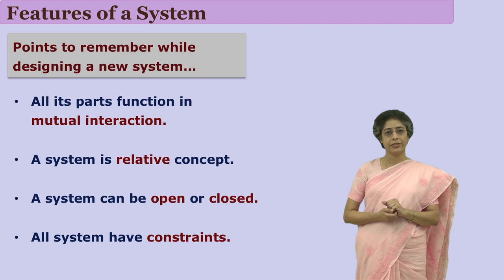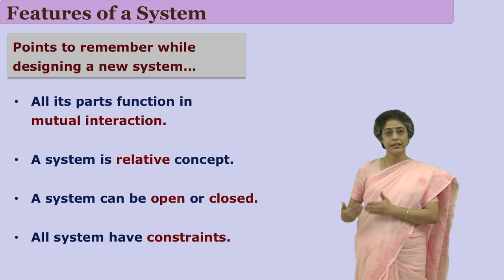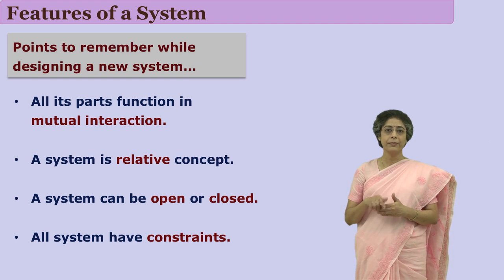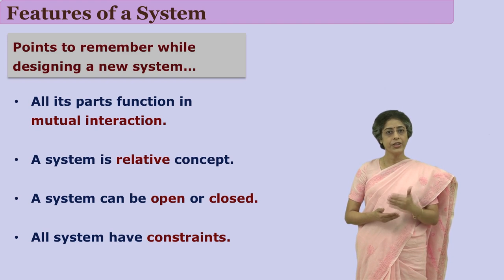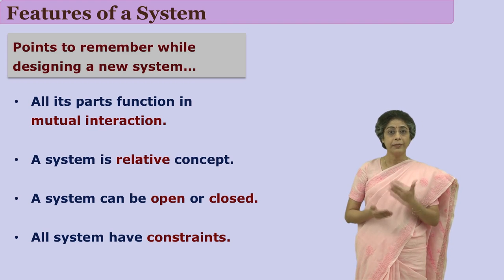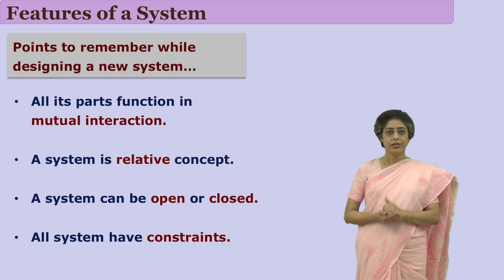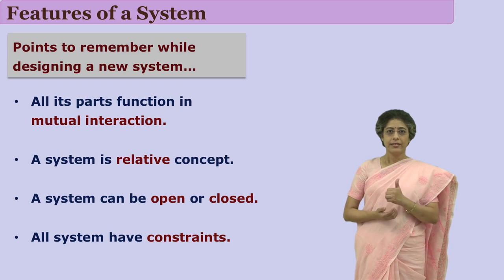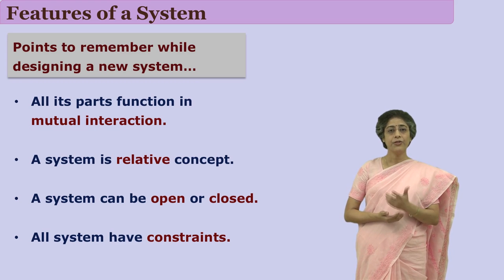A system is a relative concept. A system has many components, and many of these components themselves can be subsystems. For example, if we talk about a school, then the library is a component of a school, and the library itself is also a subsystem.